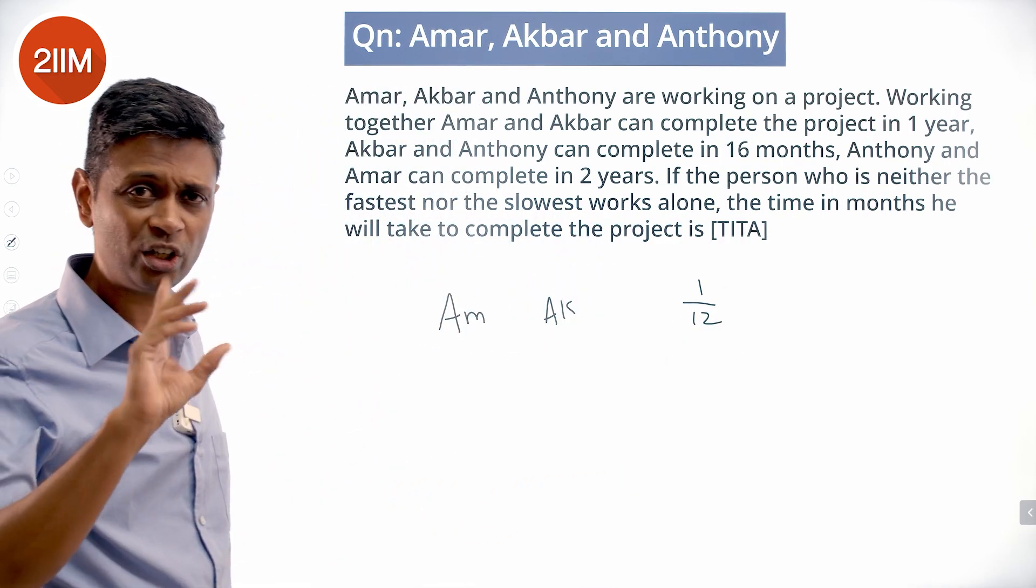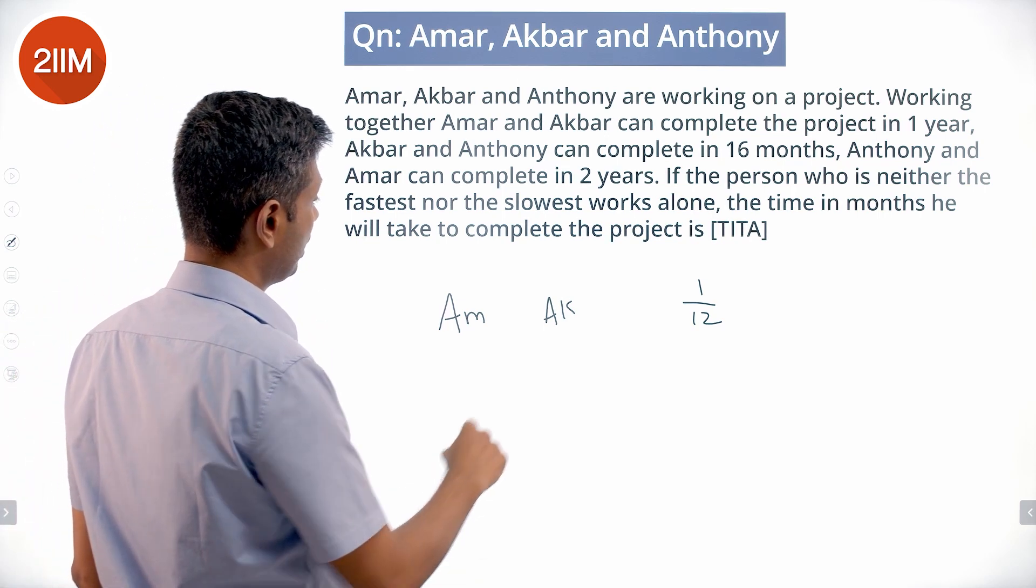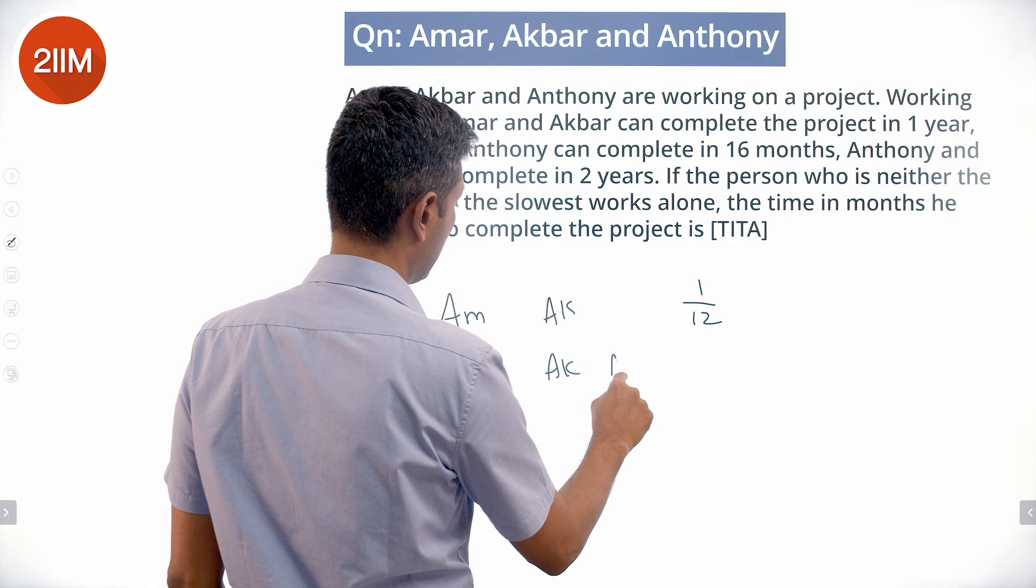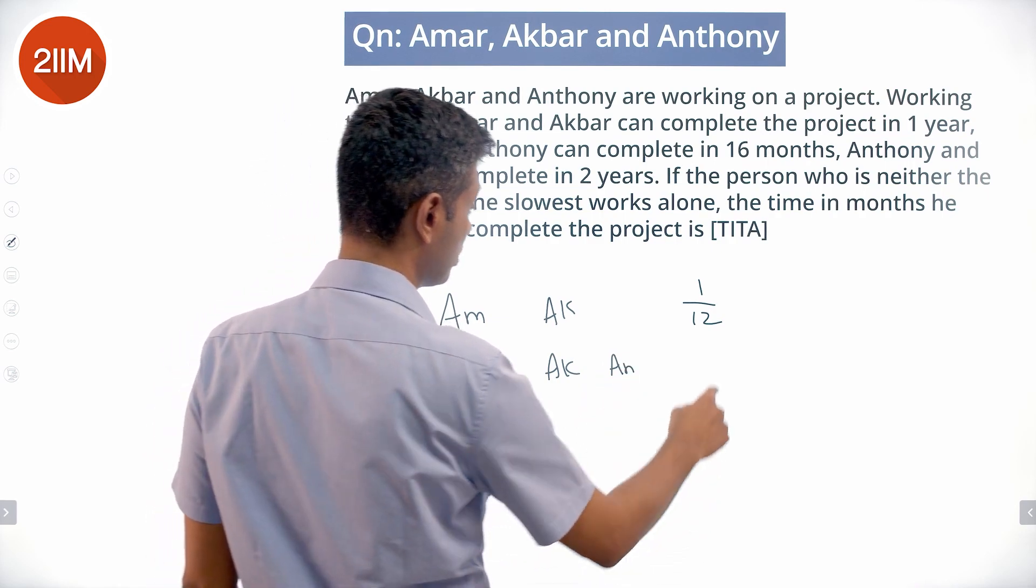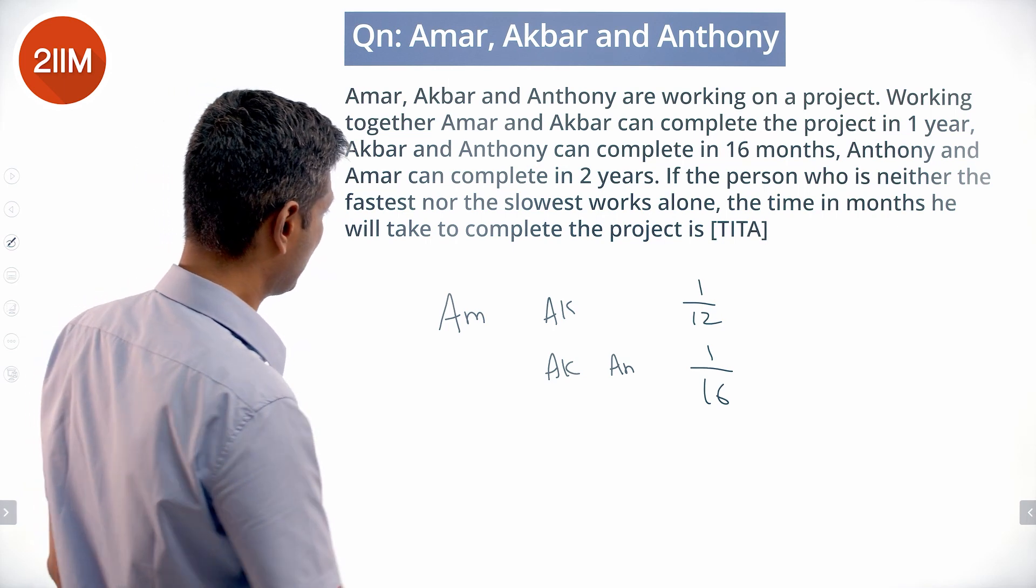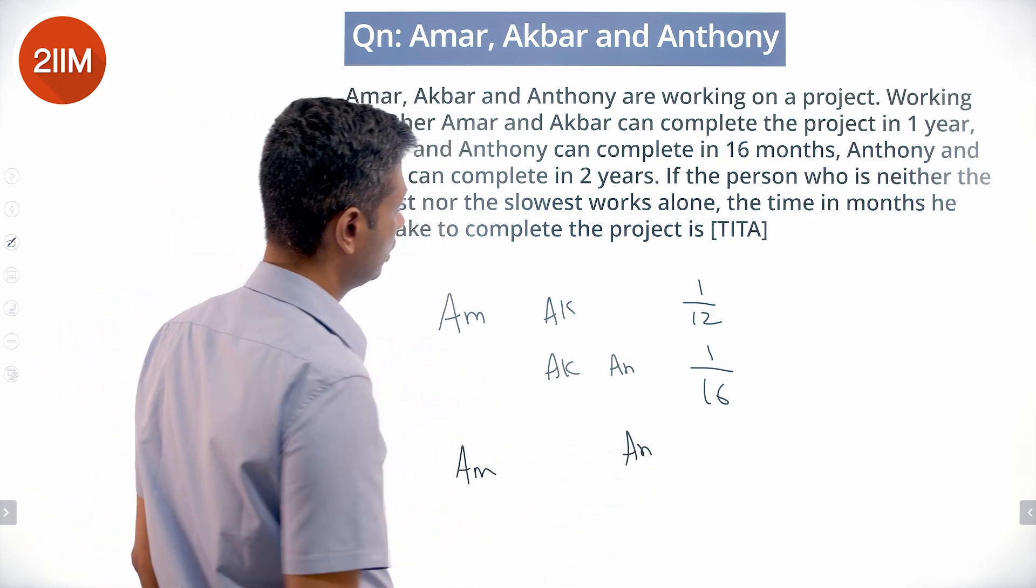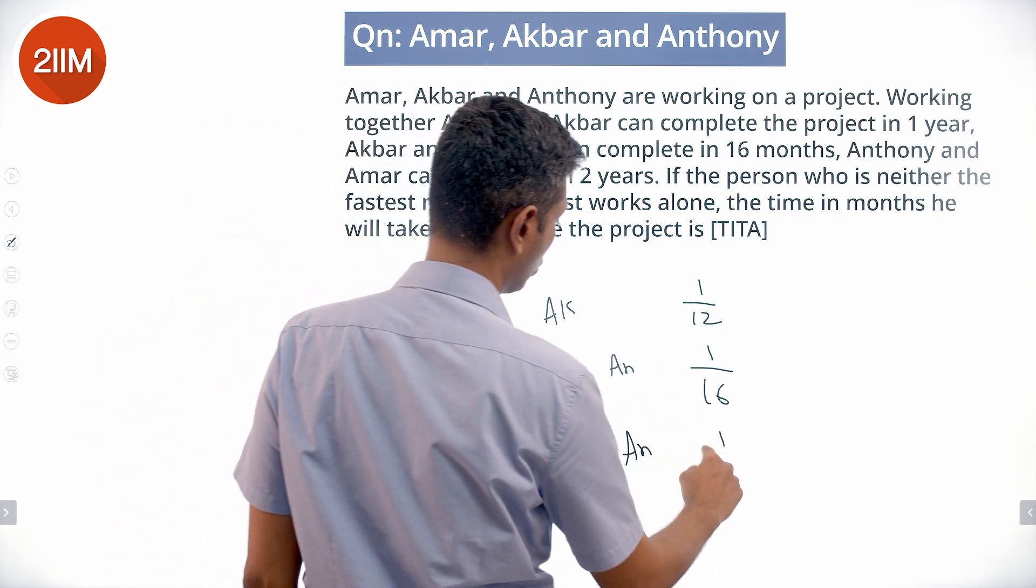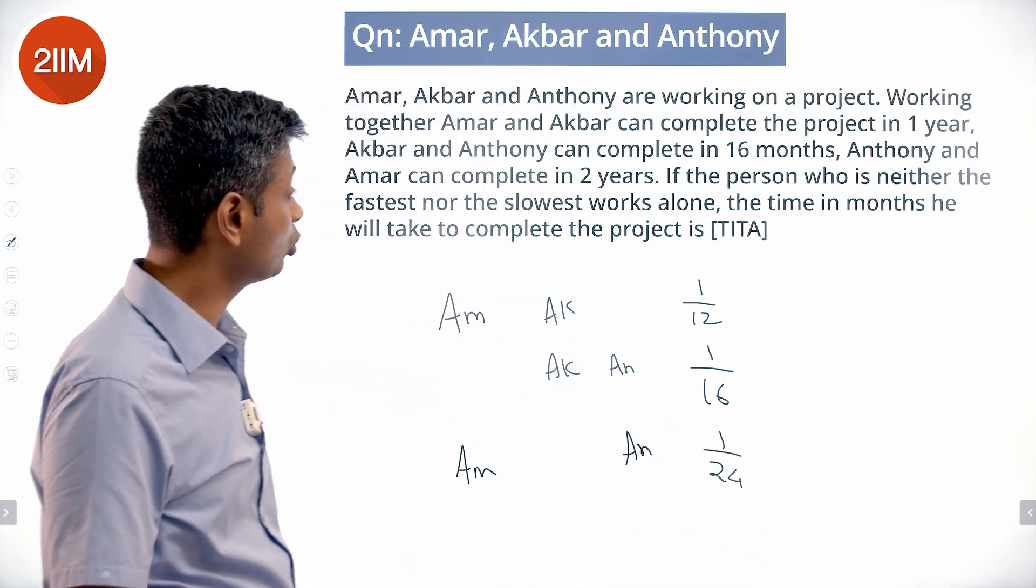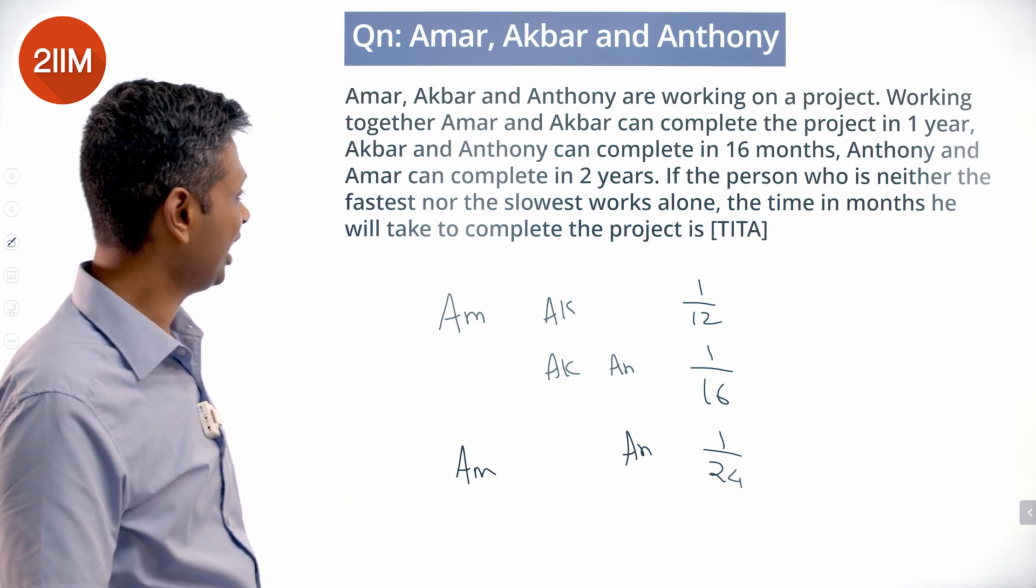So they can finish 1/12 of the task in a month. Akbar and Anthony can complete it in 16 months, or in one month they can finish 1/16 of it. Anthony and Amar can finish it in two years, which is 1/24 per month.